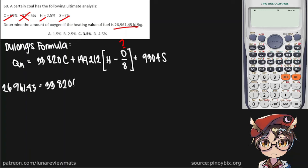33,820, .69, remember to convert from percent. H is 0.025, we're looking for the oxygen, percent weight of oxygen, I should say. And finally, multiply 9,304 by the percent weight of sulfur.